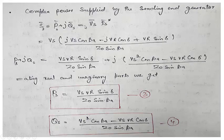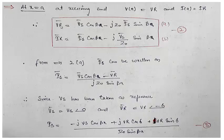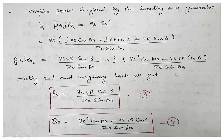The complex power supplied by the sending-end generator is S equals Ps plus j·Qs equals Vs times Is conjugate. Since Vs has no angle, we take the complex conjugate of Is, changing the sign of the imaginary parts. This gives Ps plus j·Qs. Separating real and imaginary parts: the real part Ps equals Vs·Vr·sin(δ) divided by Z₀·sin(β·A), and the reactive part Qs equals [Vs²·cos(β·A) minus Vs·Vr·cos(δ)] divided by Z₀·sin(β·A).